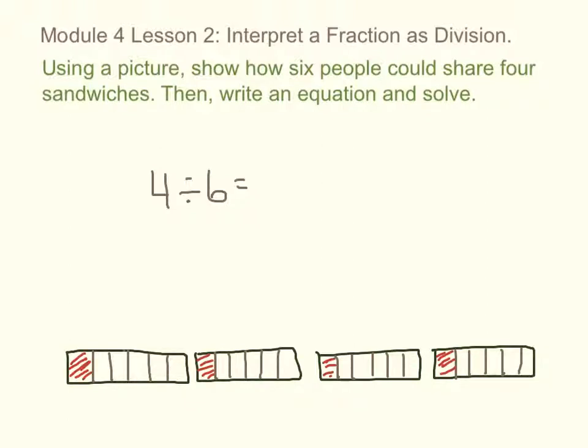Each person gets 1 sixth of each of the four sandwiches. So if each person gets 1 sixth of each sandwich, then each person gets 4 sixths. 4 divided by 6 equals 4 sixths.